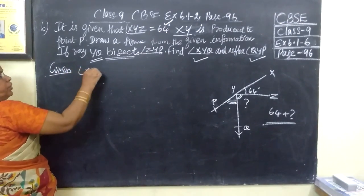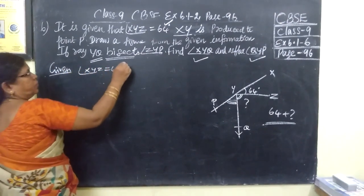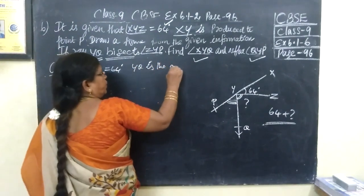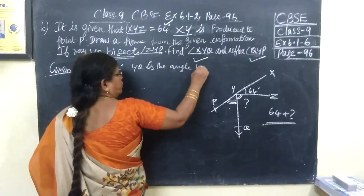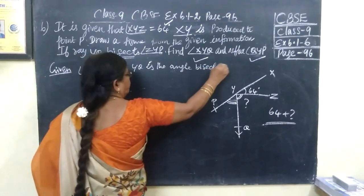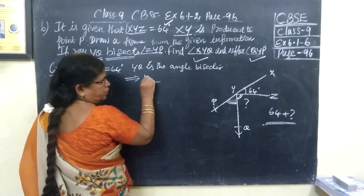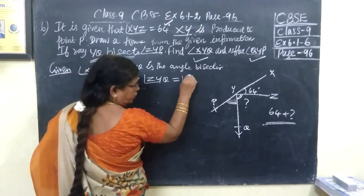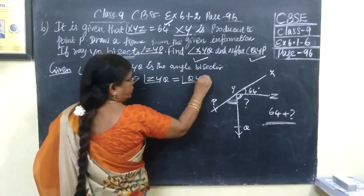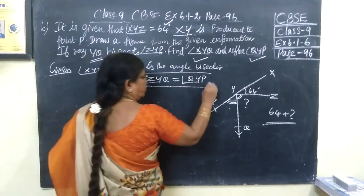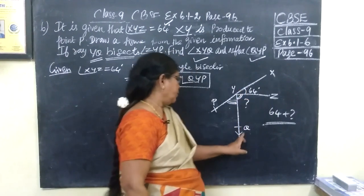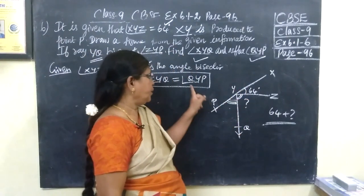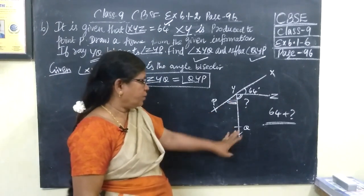Given angle XYZ equal to 64°. Then YQ is the angle bisector. Which implies angle ZYQ equal to angle QYP. This is very important. You mark like this. ZYQ equal to QYP. Since this is the angle bisector.